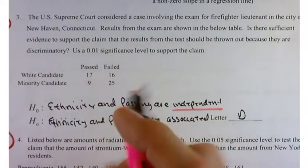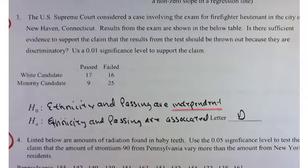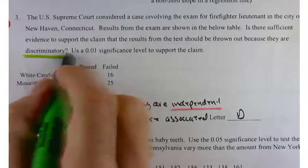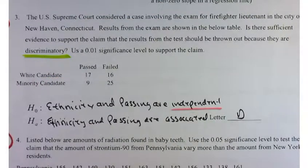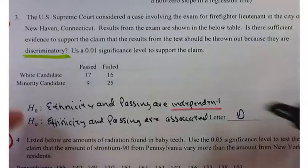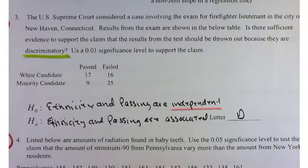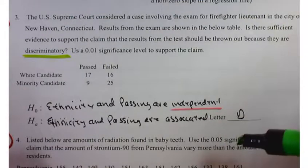Is there sufficient evidence to claim results from the test should be thrown out because they are discriminatory? By saying that they're discriminatory, it means that one influences the other, so that they're not independent. You have to start out with the assumption that they are independent.